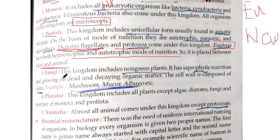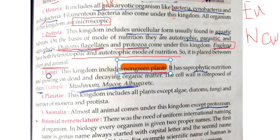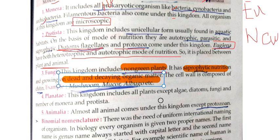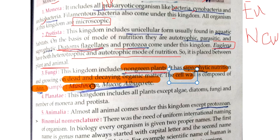One more example is Euglena, which has both heterotrophic and autotrophic modes of nutrition. The third kingdom is Fungi. All non-green plants come under Fungi. These take saprophytic nutrition and depend upon dead and decaying organic matter. The cell wall of fungi is made of chitin. The best example is mushroom; others include Mucor and Albugo.